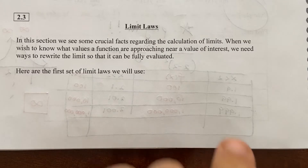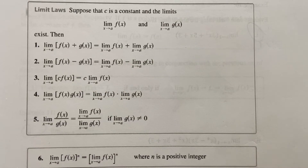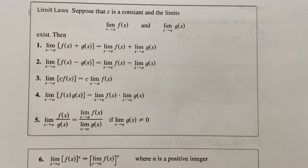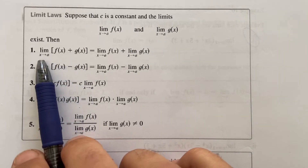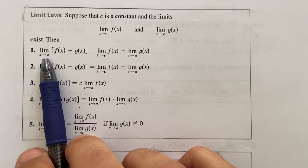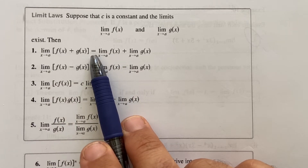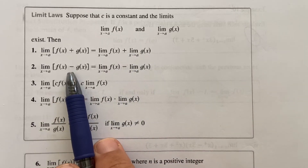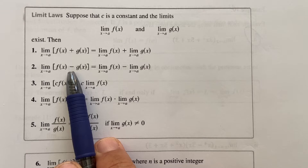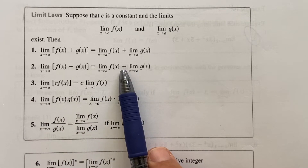So here is a whole list — there are 11 here, and we'll see a few more later. Here's what I mean by the arithmetic of limits: if you have the limit of a sum, so the limit as x approaches a, then that's totally equivalent to the sum of limits. If you have the limit of a difference, then that's equivalent to the difference of the limits. You can break up this work into separate limits.